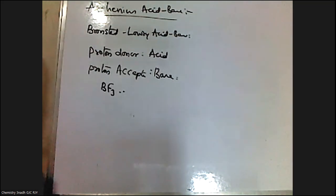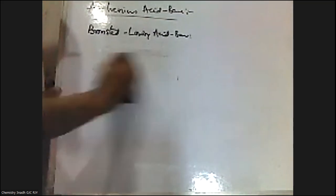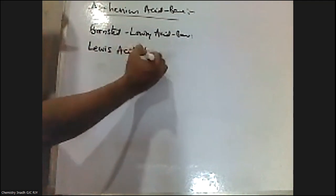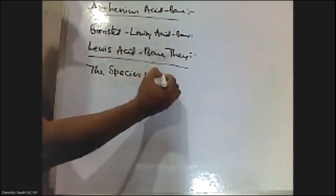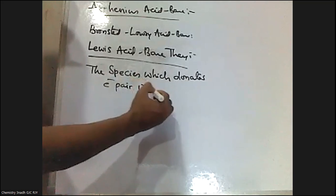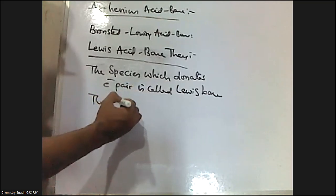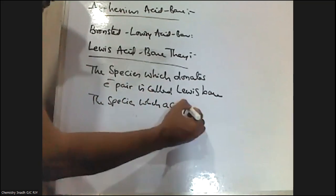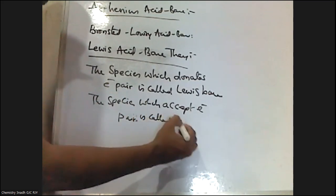To explain the acidic nature of electron deficient species such as BF3, AlCl3, and so on, one more theory emerged — the Lewis acid base theory. According to Lewis acid base theory, the species which donates an electron pair is called a Lewis base, and the species which accepts an electron pair is called a Lewis acid.